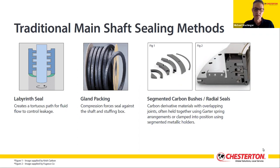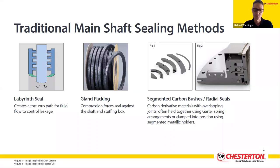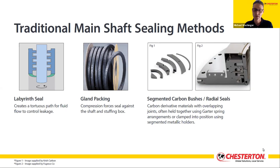One advantage that gland or mechanical packing has is that it tends to support the shaft it is sealing against, so axial or run-out movements can somewhat be tolerated. Then came along segmented bushings or plates — originally made using metal-to-metal surfaces, a softer metal such as bronze against a harder metal such as stainless steel, with lots of cooling or flushing liquid required. Eventually the softer material was replaced by carbons or derivatives of carbons, and these segments were introduced to greatly reduce friction and therefore the amount of flushing water required.